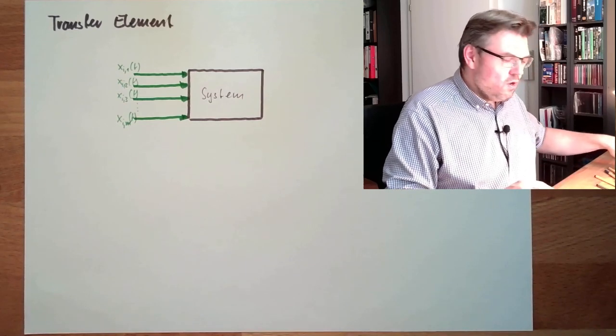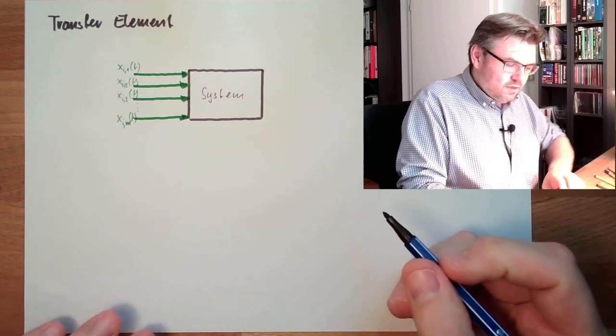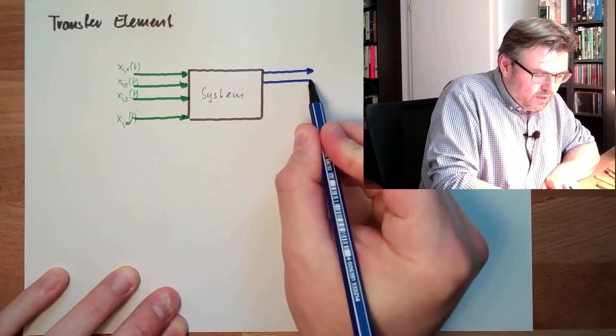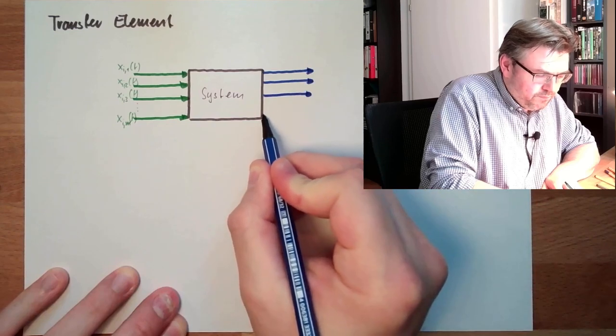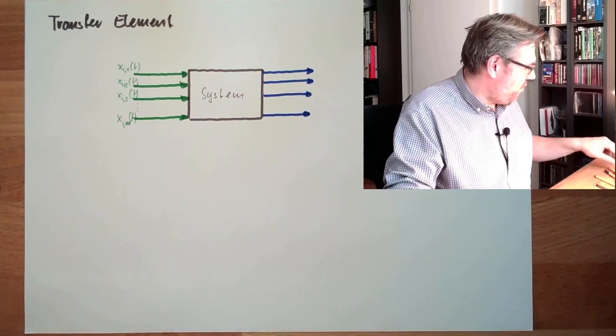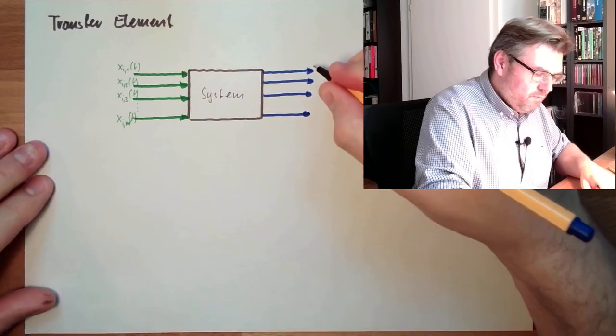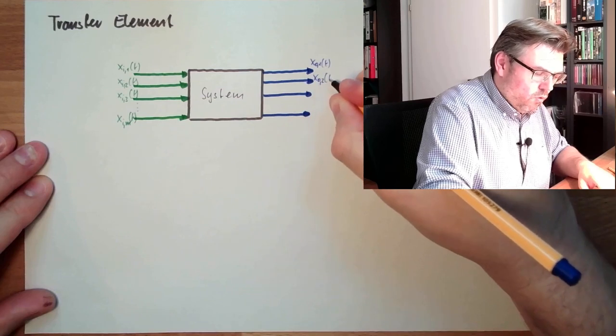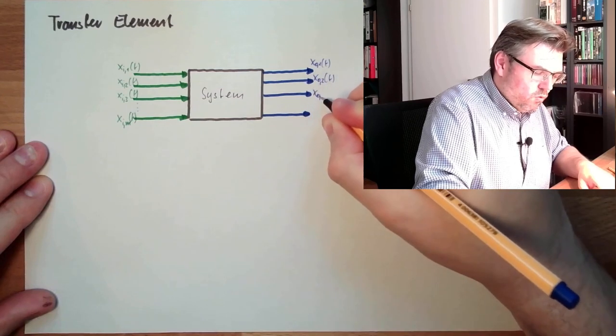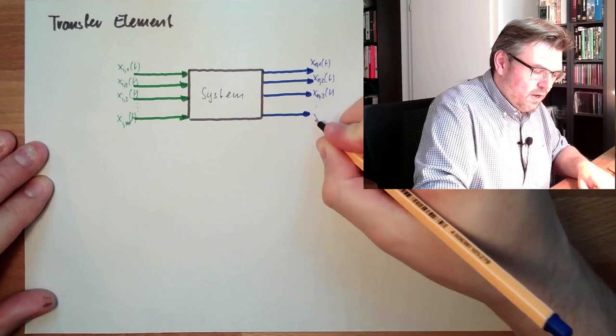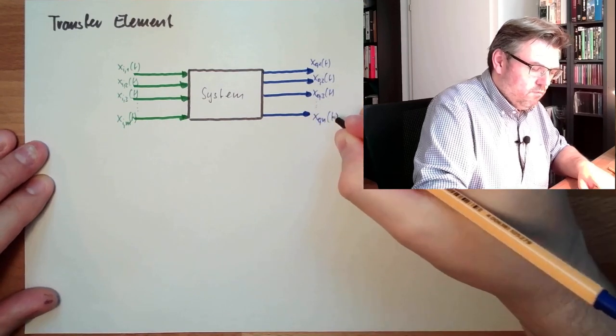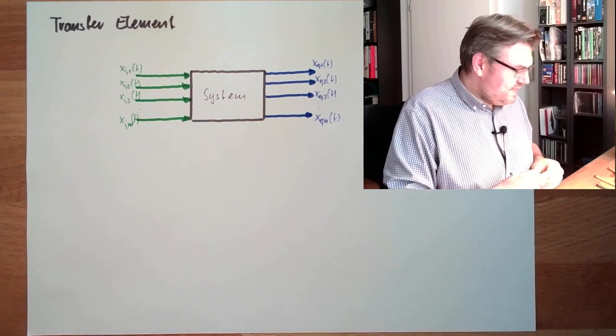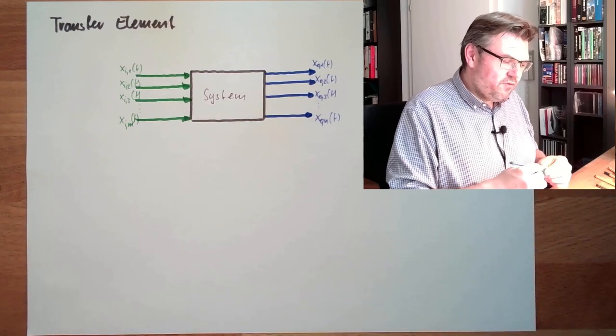And the system is reacting and is producing a number of outputs. So there are output values as well of the system. It can also be a number of outputs. And we call them XO1, XO2, O for output, XO3, also be a number XO, N. It must not be the same number, N and M. So this is a system, or this is a transfer element.